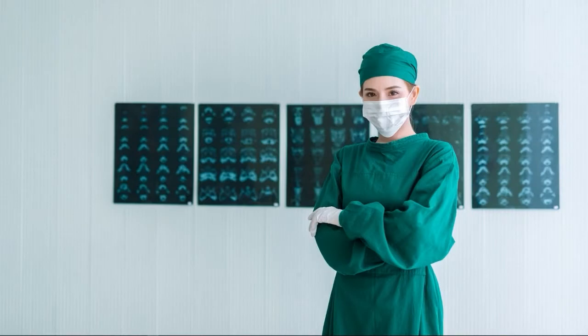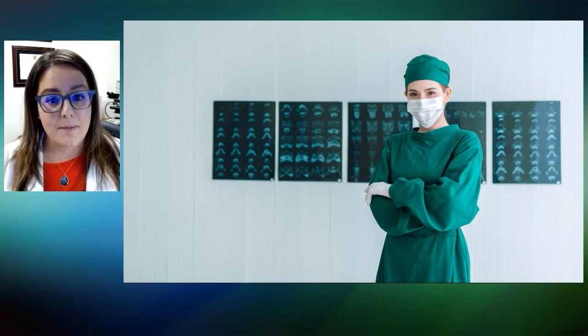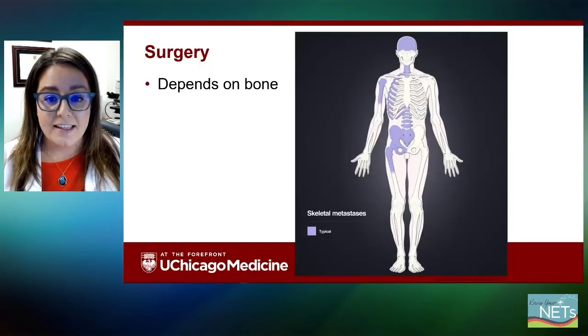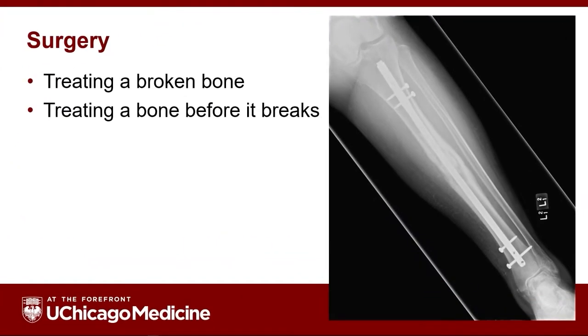Now let's dive in and talk about some of the treatment options for metastatic bone tumors. In general, they fall into two categories: surgery and other treatments. As an orthopedic oncologist, my main role in taking care of patients with neuroendocrine tumors is to help treat or prevent broken bones from metastatic tumors with surgery. The type of surgery that we use for these tumors depends a lot on which bone or which part of the skeleton is involved. We use surgery in two situations: treating a bone that has broken because of a metastatic tumor, or to prevent a bone with a tumor from breaking.